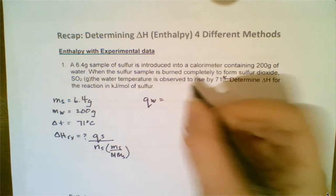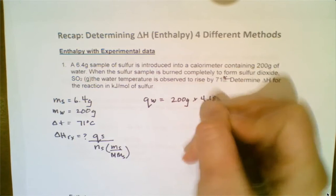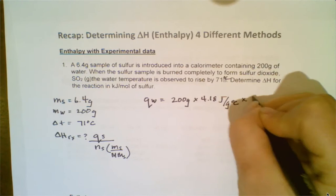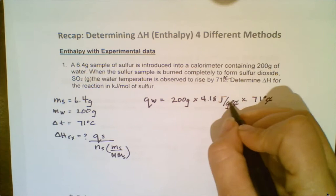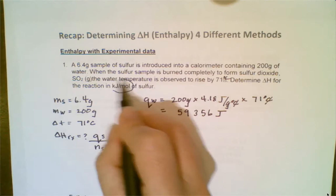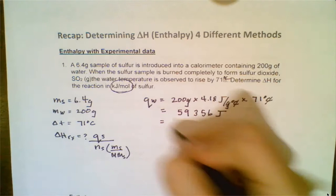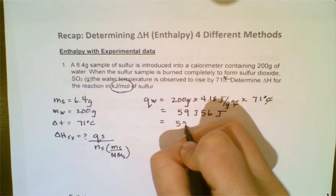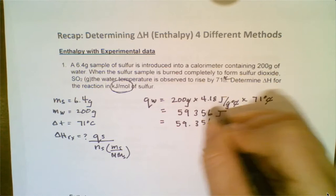We have 200 grams times 4.18 joules per gram degree Celsius for water, with a change in temperature of 71 degrees Celsius. The Celsius and grams cancel out, and what we are left with is joules: 59,356 joules. Because the question asks us to report in kilojoules per mole, I'll convert that to kilojoules — that's 59.356 kilojoules of energy absorbed by the water.